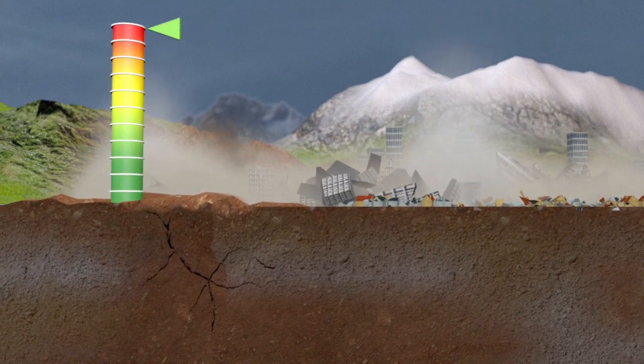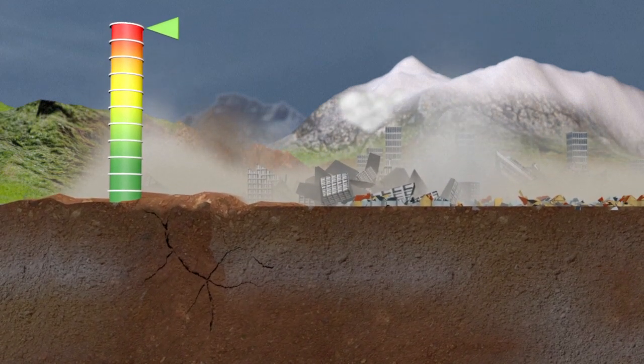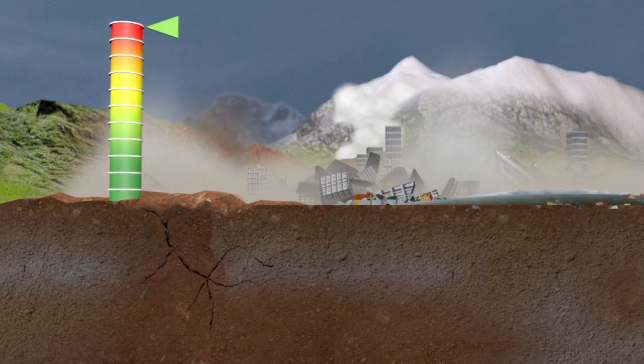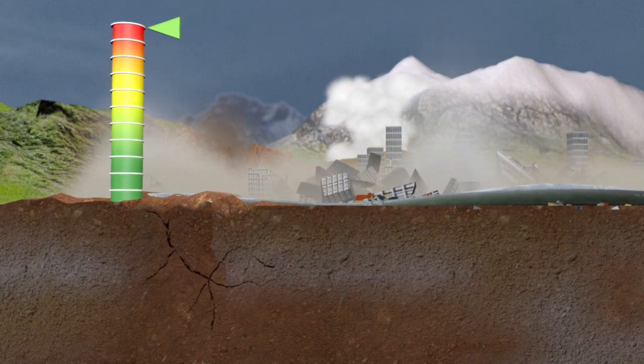When a big quake strikes, the scale acts as a warning against other natural phenomena which could be triggered, such as landslides, avalanches, or tsunamis.